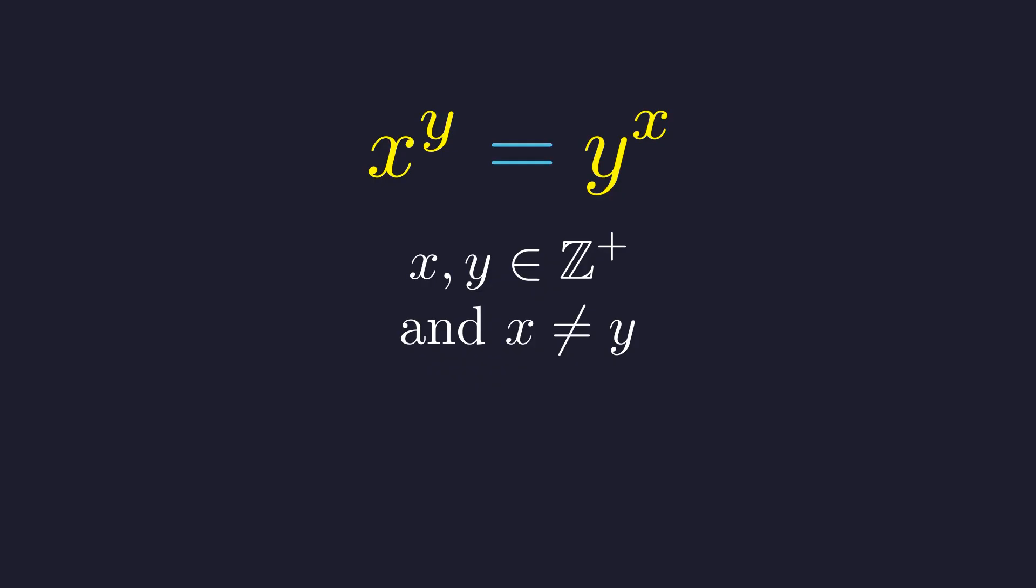Usually, the bigger the base or exponent, the result just skyrockets in one direction. But here's the thing. There actually are pairs where this works perfectly. And once you see the trick, you'll never look at exponents the same way again.